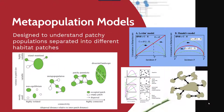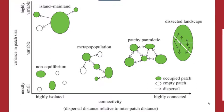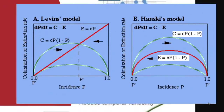As you might recall from previous lectures, a metapopulation is a subpopulation of a larger population, essentially designed to look at and understand the patchiness associated with populations and how organisms get separated into different habitat patches. We have highly isolated patches — mostly small — along the bottom left, increasing in connectivity along the x-axis, and variability in patch size along the y-axis at the top. There are a variety of different patch dynamics that can occur and influence population size.